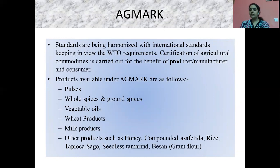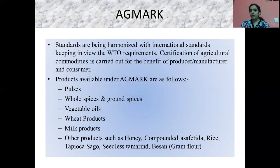Certification of agricultural commodities is carried out for the benefit of producers, manufacturers and consumers as well. The products available under Agmark are a total of 205 products.